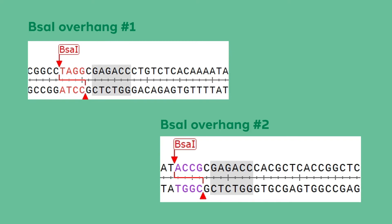In the case of a type 2S enzyme with a 4 base pair overhang, there are 256 possible overhangs associated with a single recognition site. Therefore, mere cleavage by a particular type 2S enzyme does not guarantee compatible ends. The only way to guarantee compatible ends is to design them into your cloning strategy.